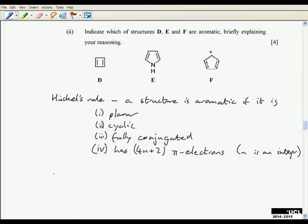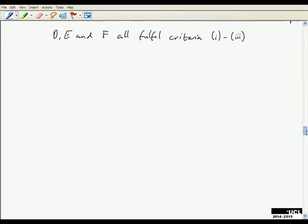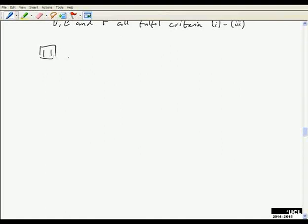If we look at the three structures we've got—d, e, and f—we'll notice they're all planar, cyclic, fully conjugated. We can save ourselves a bit of time by noting that all three fulfill three of the criteria, so all we're looking at is whether they have 4n+2 pi electrons.